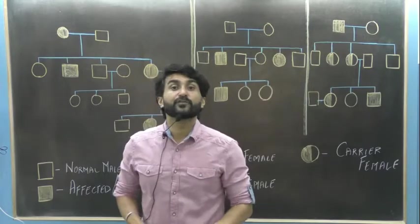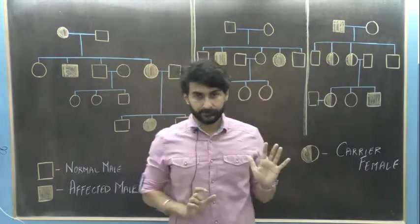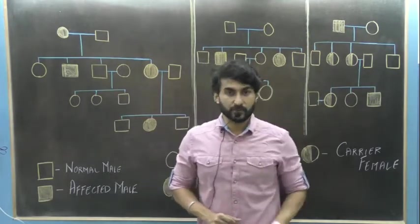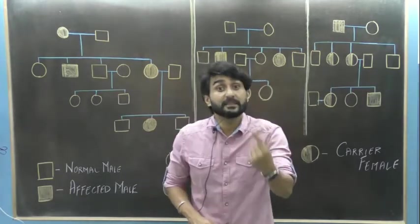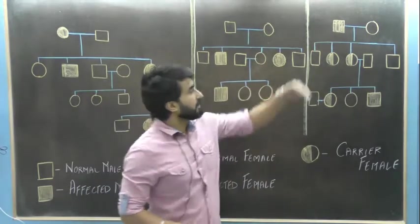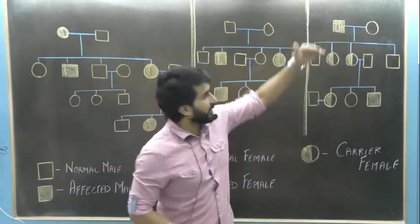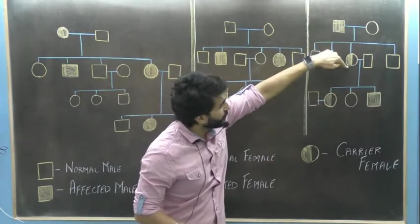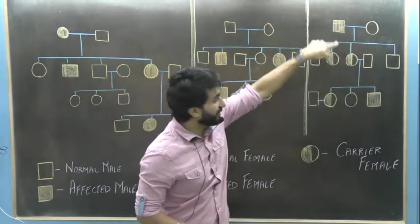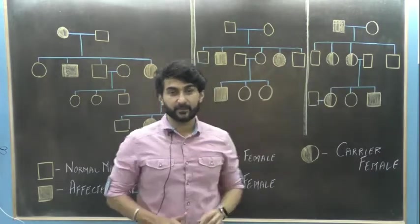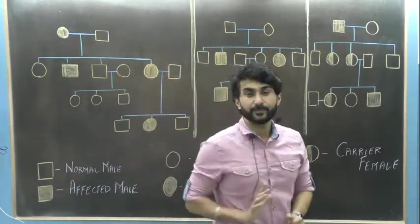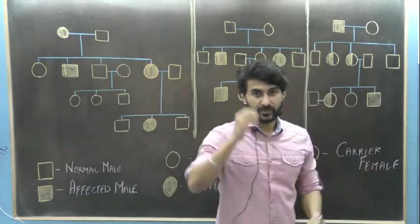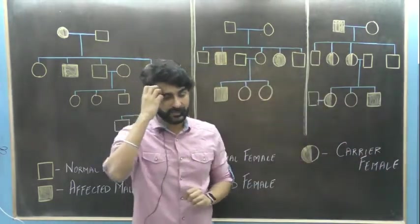The tip is: if you don't see a pattern — no crisscross inheritance — that means it is an autosomal disorder. If you see crisscross inheritance, grandfather suffering and grandson suffering through the carrier female, it's a sex chromosomal disorder. That's your first step. So you have identified whether it is a sex chromosomal disorder or an autosomal disorder.